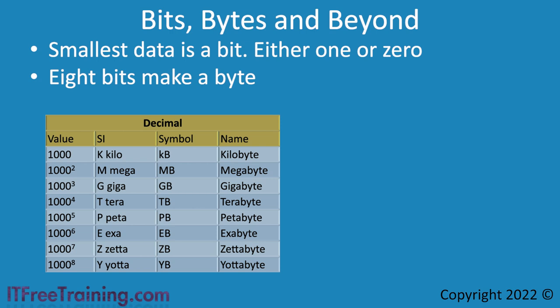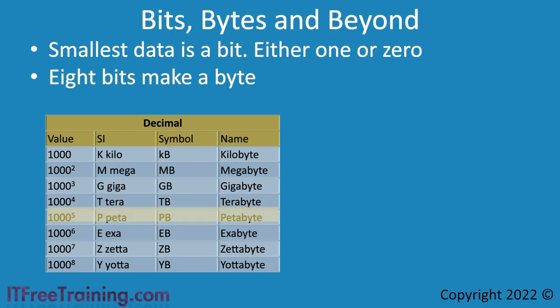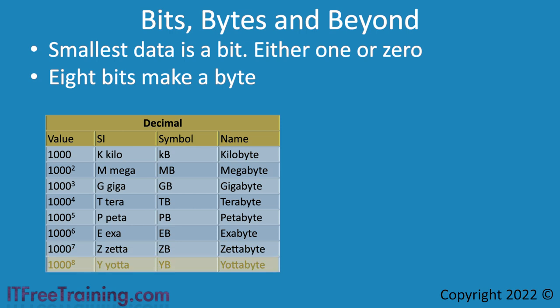Starting with 1,000 bytes known as a kilobyte, going down the table you have megabyte, gigabyte, terabyte, petabyte, exabyte, zettabyte, and lastly yottabyte. Later in the video, I will give you an example of each of these to give you an appreciation of how much data each one stores.